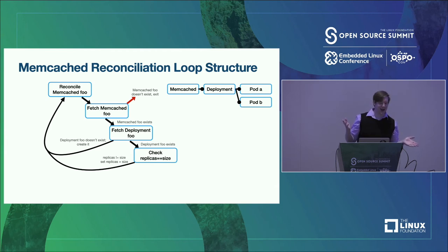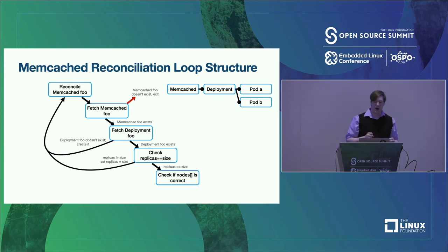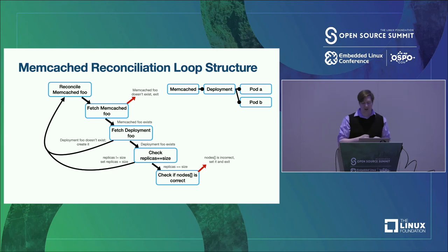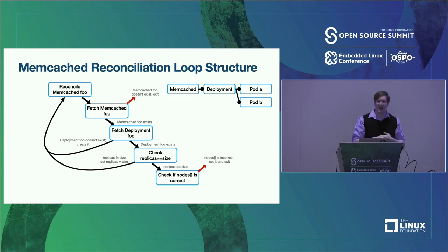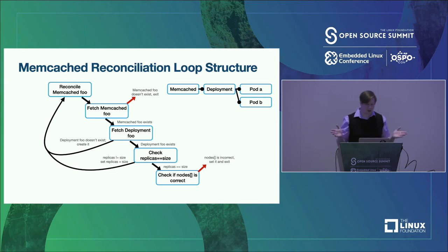We come back, execute each step all the way until we check replicas equal size again, and assuming they're equal, we check status.nodes — which should contain the names of each pod backed by the deployment. We verify that; if it's incorrect, we set it, taking those pod names and jamming them into that array. And that's it — that's fully reconciled. We took the size flowing in, made sure there's a backing deployment with the correct number of pods, and flowed the pod names back into the status. We exit and mark this object as fully reconciled.